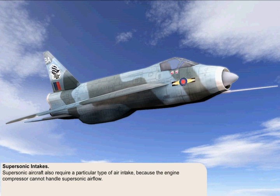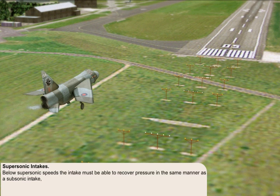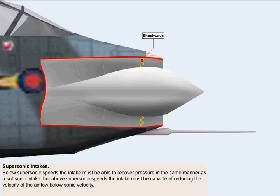Supersonic aircraft also require a particular type of air intake which is sometimes called a diffuser, because the engine compressor cannot handle supersonic airflow. Below supersonic speeds, the intake must be able to recover pressure in the same manner as a subsonic intake. But above supersonic speeds, the intake must be capable of reducing the velocity of the airflow below sonic velocity by the formation of shock waves.